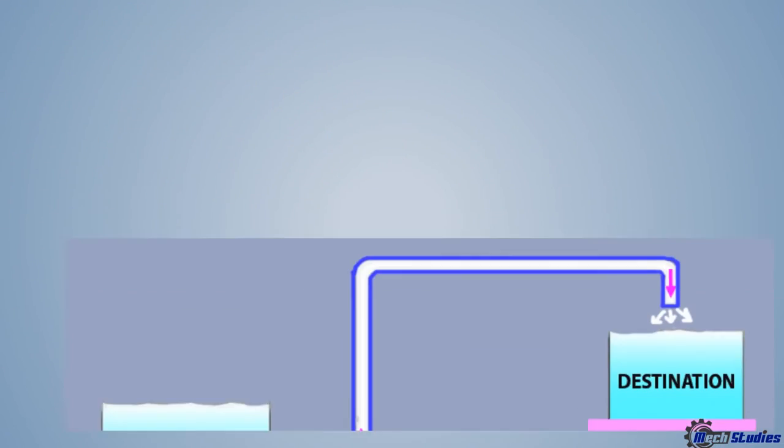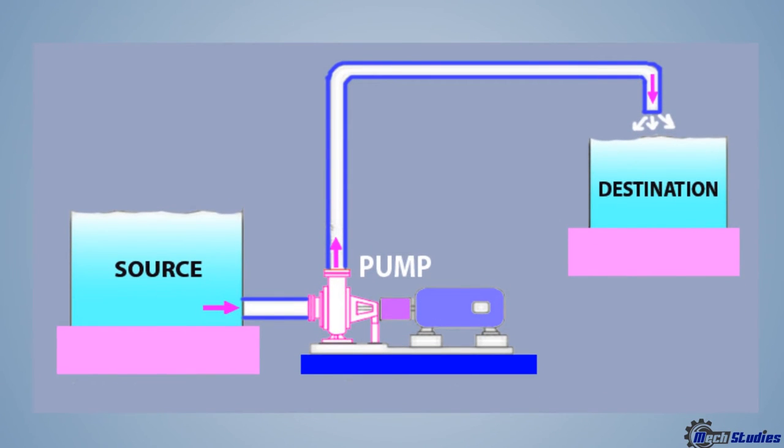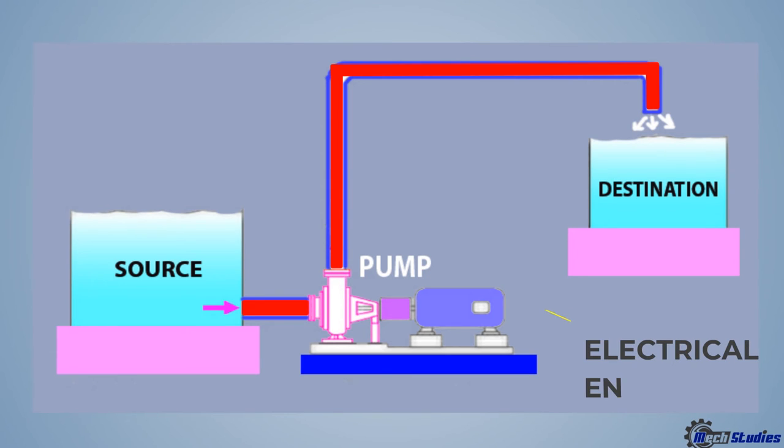Let's explain with a simple diagram. In this diagram, a pump is connected with two tanks at different levels through pipes. The pump takes the water from the source and discharges the water into the destination. Here, the pump transfers water from the lower elevation to the higher elevation, and it is done by converting electrical energy into hydraulic energy.